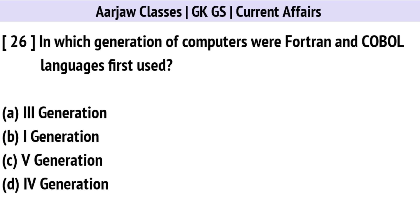In which generation of computers were Fortran and COBOL languages first used? The correct option is A: Third Generation.